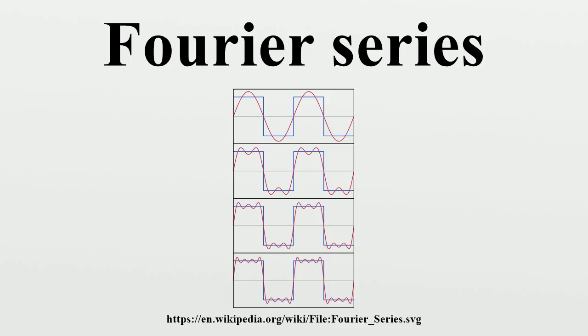If f is in C^k, then the kth derivative satisfies a similar relation. In particular, since f^(k) tends to zero, we have that n^k ĉ_n(f) tends to zero, which means that the Fourier coefficients converge to zero faster than the kth power of n.